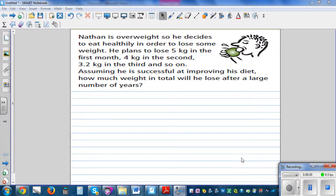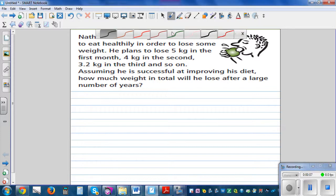Nathan is overweight so he decides to eat healthily in order to lose some weight. He plans to lose 5 kg in the first month, 4 kg in the second month, 3.2 in the third and so on. Assuming that he is successful at improving his diet, how much weight in total will he lose after a large number of years?